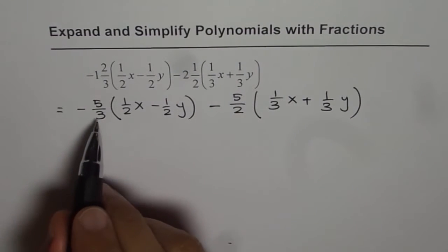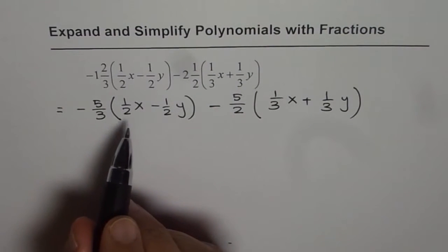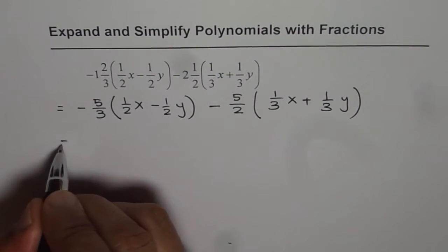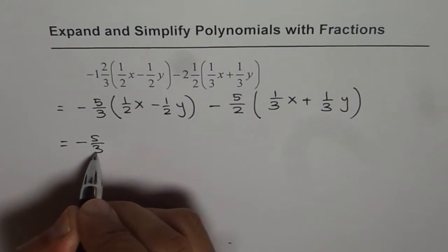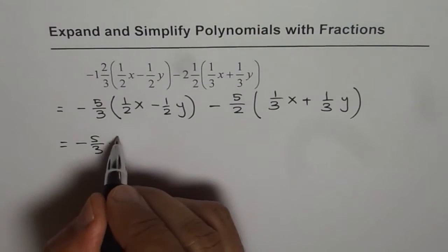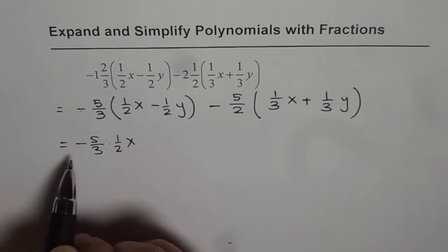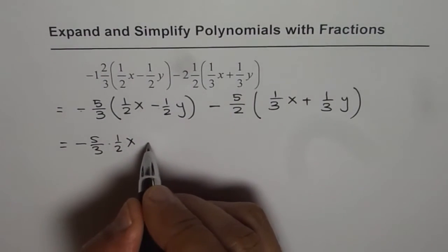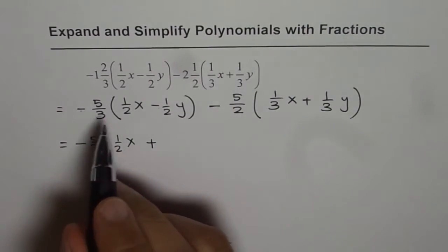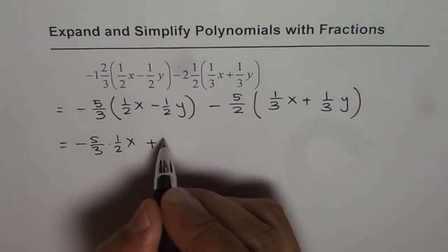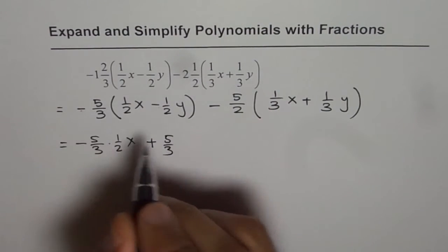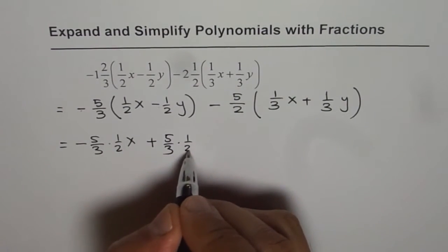Now let's apply distributive property and expand them. So we have minus 5/3 times 1/2x and then we have minus times minus. When you have minus times minus it becomes plus. It's a good idea to write plus straight away. 5/3 times 1/2y.